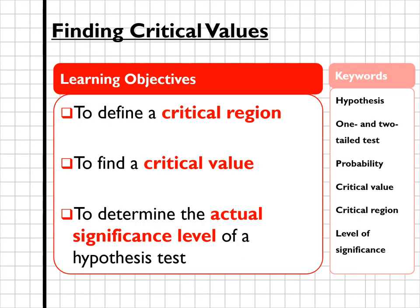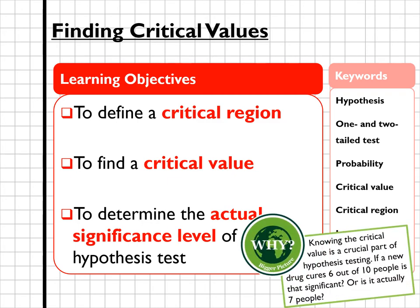Today's learning objectives: we're going to start by making sure we recall what a critical region is. We're then going to find a critical value and use that to determine the actual level of significance of a hypothesis test. Where this comes in handy, if you know the critical value you are then able to determine whether, for example, if a new drug cures six people if that's significant or if actually seven people is significant.